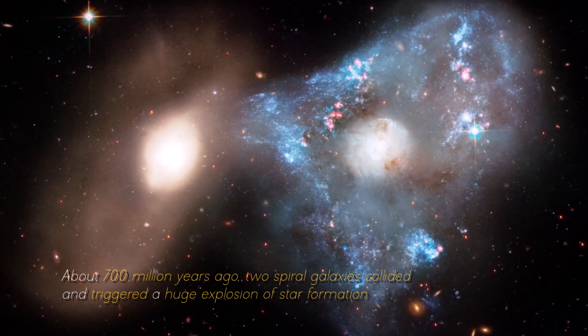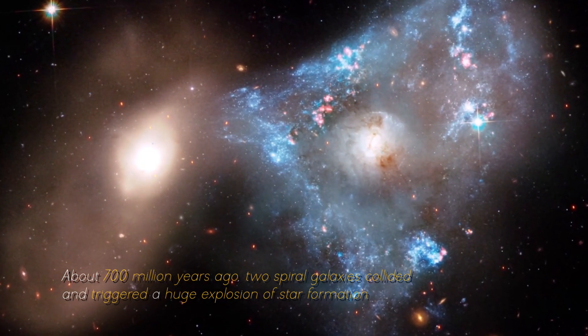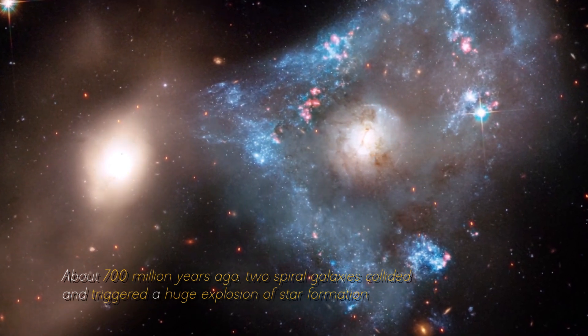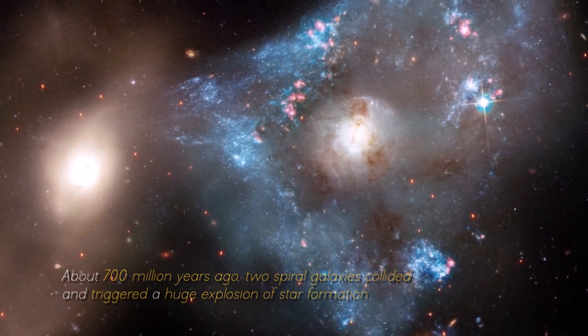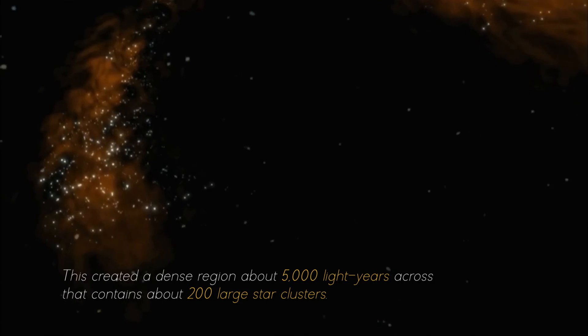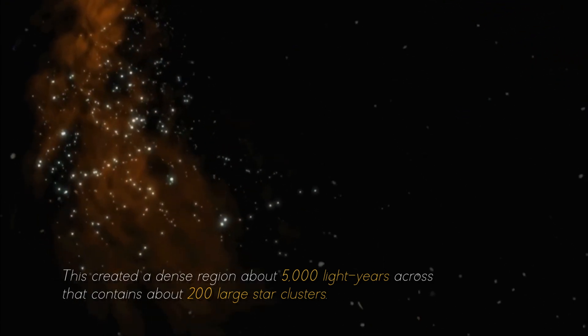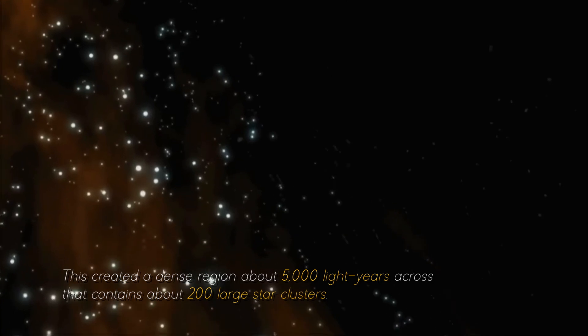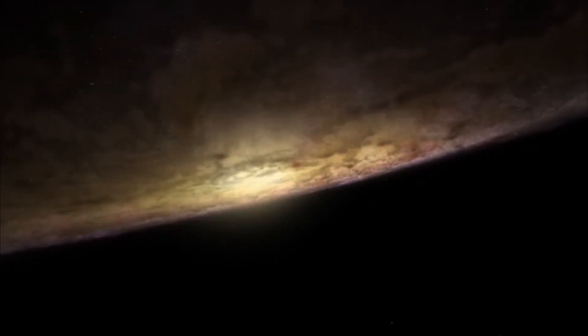About 700 million years ago, two spiral galaxies collided and triggered a huge explosion of star formation. This created a dense region about 5,000 light years across that contains about 200 large star clusters. Surprisingly, this small area contains as much gas as the entire Milky Way.